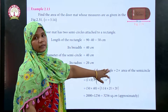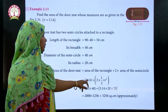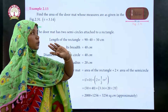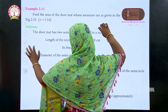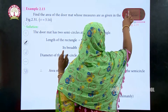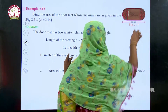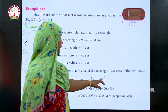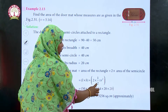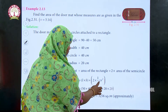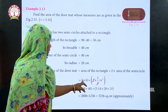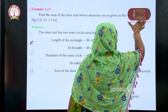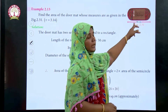To find the total area, we calculate: area of the rectangle plus two times the area of a semicircle. The area of the rectangle is length times breadth. Why two times? Because there are two semicircles attached to the rectangle. The area of a semicircle is pi r squared divided by 2, so two times pi r squared over 2. The total length of the doormat is 90 centimeters.